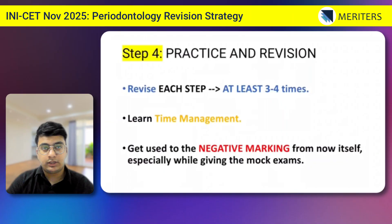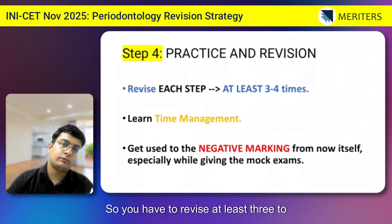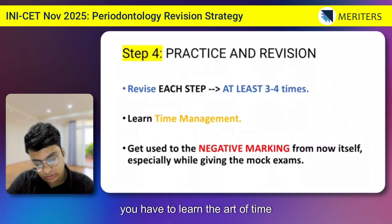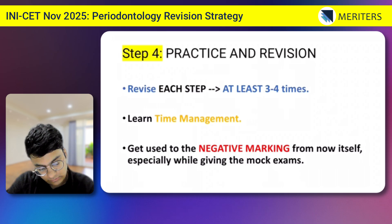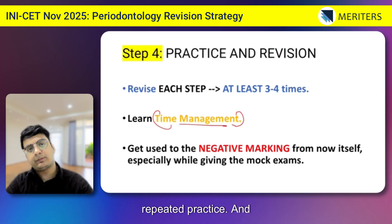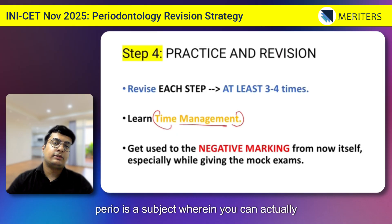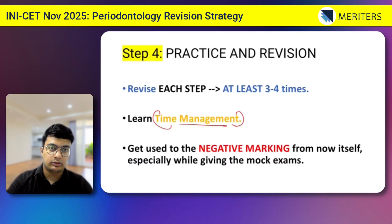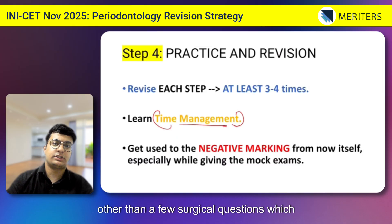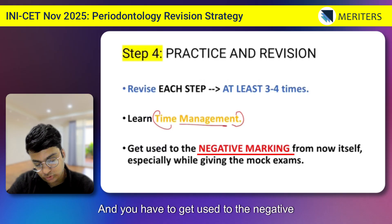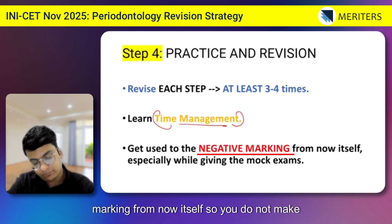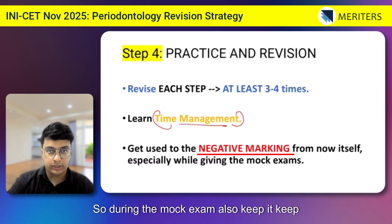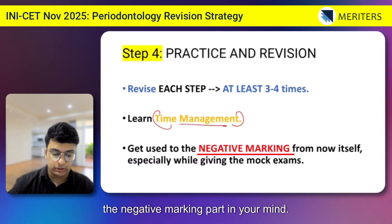Step four is: revise and practice. You have to revise at least three to four times for all topics, and you have to learn the art of time management, which only comes with repeated practice. Perio is a subject where you can actually save a lot of time because most questions are direct and short, except for a few surgical questions with more technical details. Get used to negative marking from now so you do not panic in the exam hall — keep negative marking in mind even during mock exams.